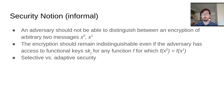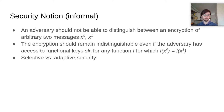Let's try to understand what it means for a functional encryption scheme to be secure. The security notion is usually modeled as an indistinguishability game, where an adversary submits two messages, say x0 and x1, and the challenger encrypts one of them. The adversary shouldn't be able to tell which message was encrypted, even if he or she has access to functional encryption keys.